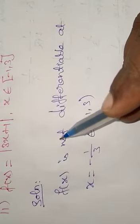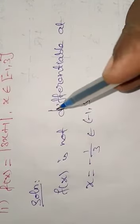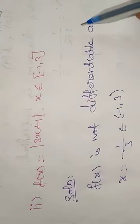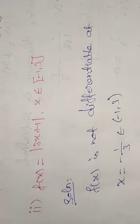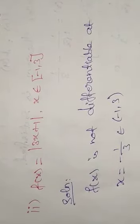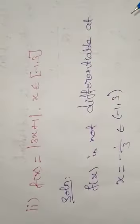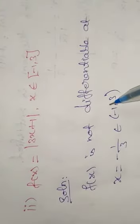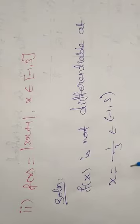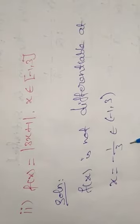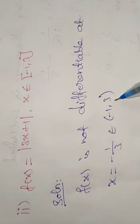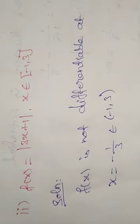Solution: Whatever the function they will give in the modulus value, it cannot be differentiable. Whatever the function will be, don't bother about it. It is continuous but it is not differentiable. So the reason is f(x) is not differentiable at x equals minus 1 by 3, which belongs to the open interval minus 1 comma 3.